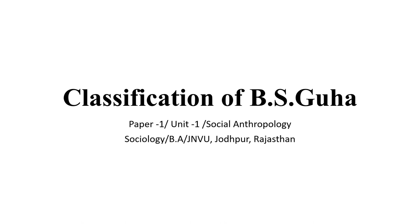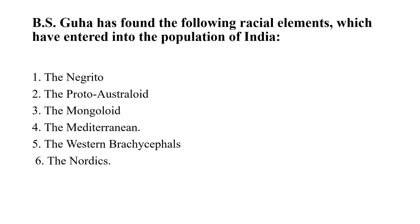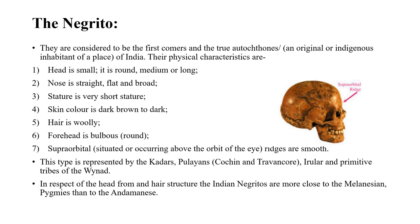Hello everyone, welcome to Sociology Simplified. Today we are covering the topic of classification by B.S. Guha of Indian races. There are six classifications: first is Negrito, second is Proto-Australoid, third is Mongoloid, fourth is Mediterranean, fifth is Western Brachycephals, and sixth is Nordic.